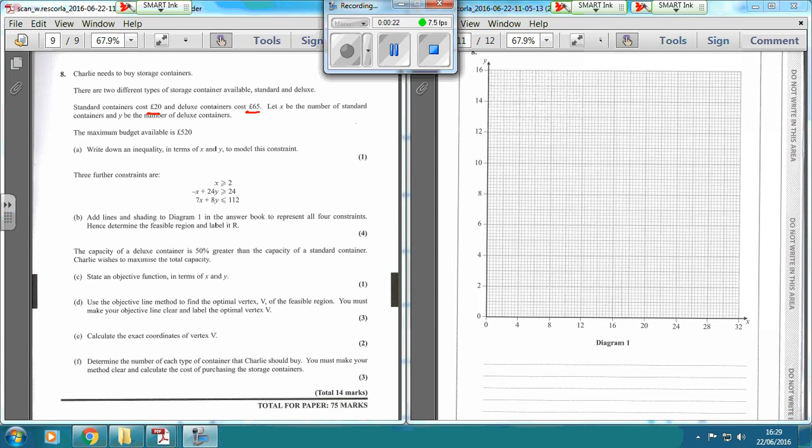Let X be the number of standard containers and Y be the number of deluxe containers. The maximum budget available is £520. So write down an inequality. So it's going to be £20 for every value of X, and if you add to that £65 for the number of Y's that you've got, that can't exceed the maximum budget. So it's going to need to be less than or equal to £520. So that's your first mark.